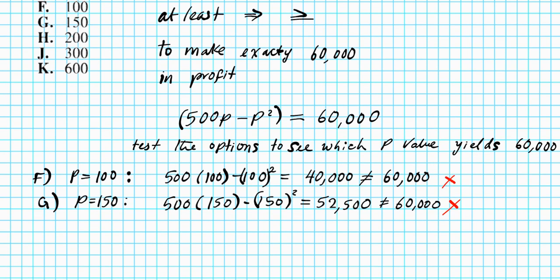Proceed to the next one. We're going to keep trying out options until we get an output of 60,000. Option H. What if p equals 200? Plug 200 into your profit expression. When you plug it into your calculator, you get an output of 60,000. And this is exactly what we want. So our answer is option letter H.